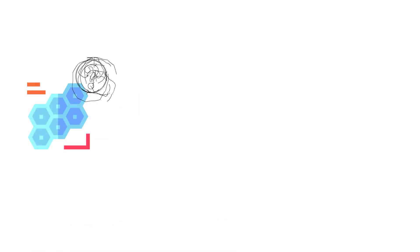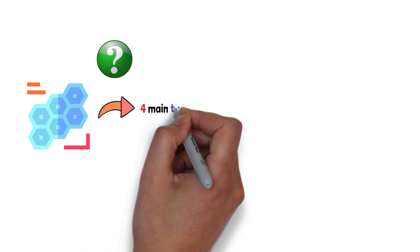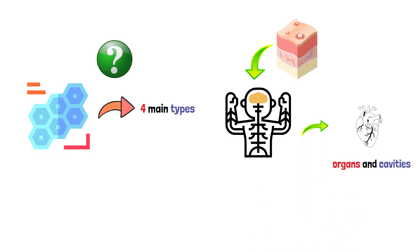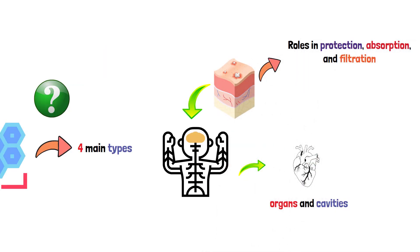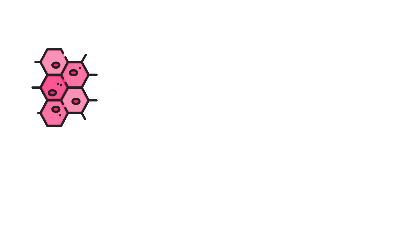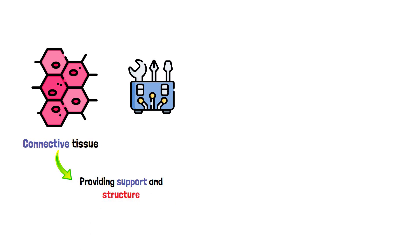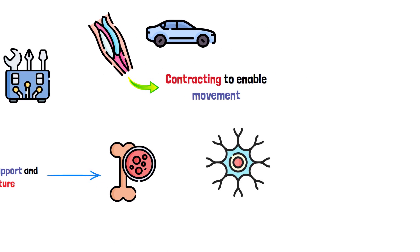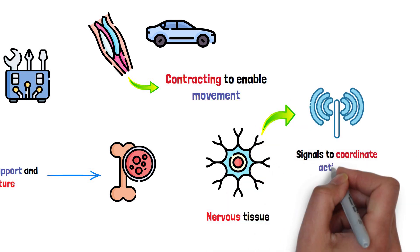Speaking of tissues, did you know there are four main types? There's epithelial tissue, which is like the body's wallpaper, lining organs and cavities and playing roles in protection, absorption, and filtration. Then there's connective tissue, the body's hardware store, providing support and structure with materials like bone and blood. Muscle tissue is like the city's motors, contracting to enable movement. And nervous tissue? That's the body's wiring, transmitting signals to coordinate activities.